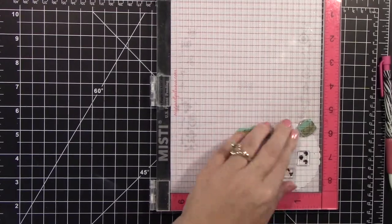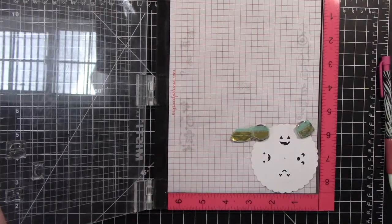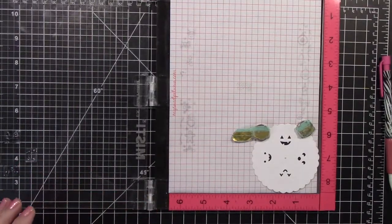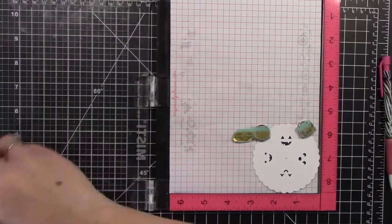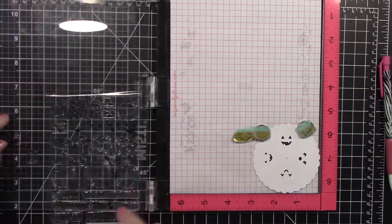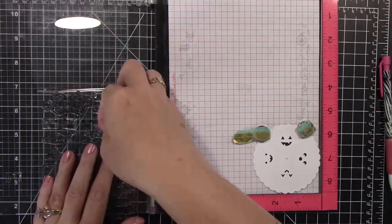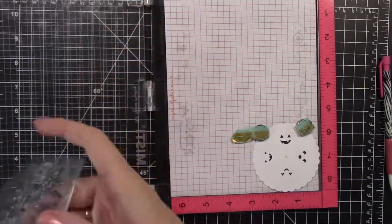And then I'm going to stamp those using the Simon Says Stamp Intense Black Ink. It's a really great ink. And this Misti is great because you could see when I first stamped down, part of the face wasn't stamped. And so you just ink it up again. Make sure your paper is in the same place and just re-stamp it.